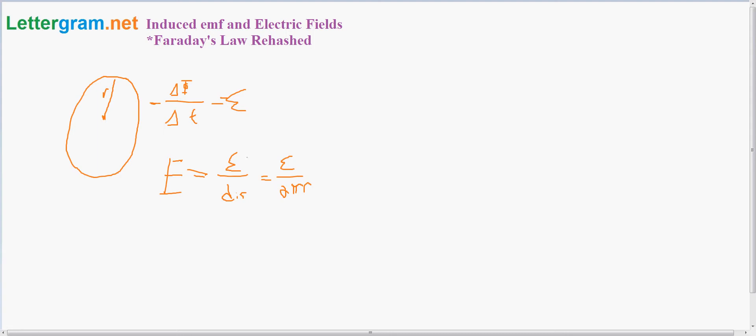So essentially, we can get what the electric field in a loop is from the change in magnetic flux over the change in time, and if we have the radius.